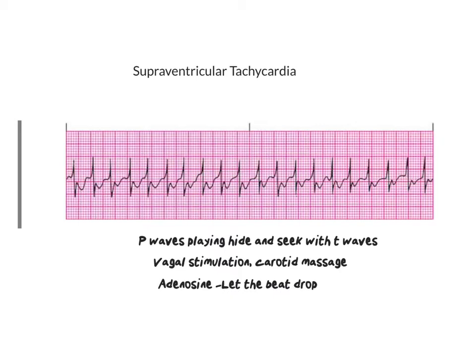Supraventricular tachycardia, also known as atrial tachycardia — the P waves, as you can see, are playing hide and seek. I don't see any P waves, or if you do see them, they're a little bit funny. The first thing we do with this is vagal stimulation. Vagal stimulation is basically when — a lot of times people will say bear down like you're having a bowel movement. That would be vagal stimulation, something called the Valsalva maneuver.